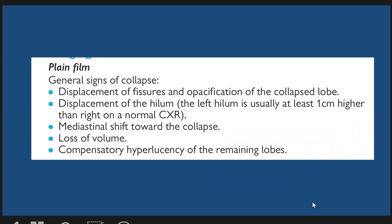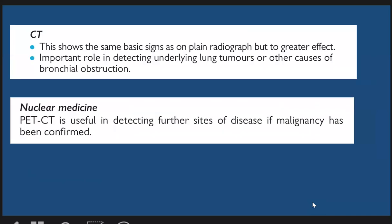In left upper lobe collapse, what we see on the plain film includes displacement of the fissure and opacification of the collapsed lobe. The left hemidiaphragm is usually at least one centimeter higher than the right. On the normal chest X-ray, mediastinal shift toward the collapse and compensatory hyperinflation of the remaining lobes are noted.